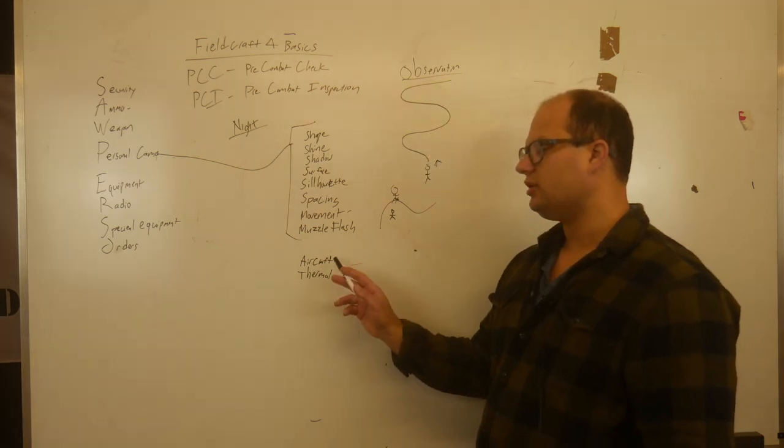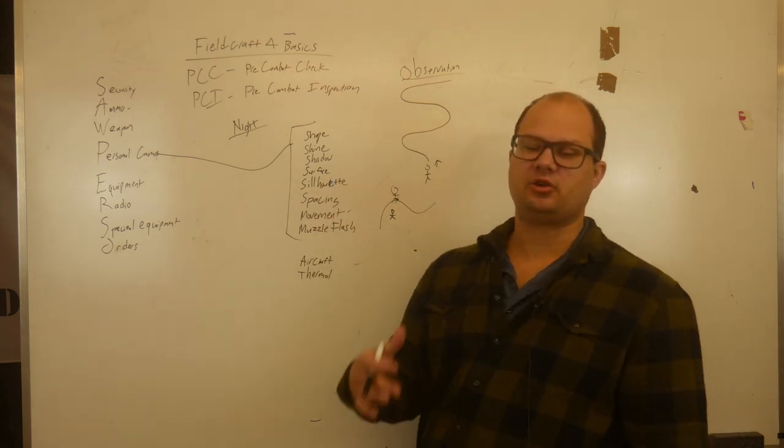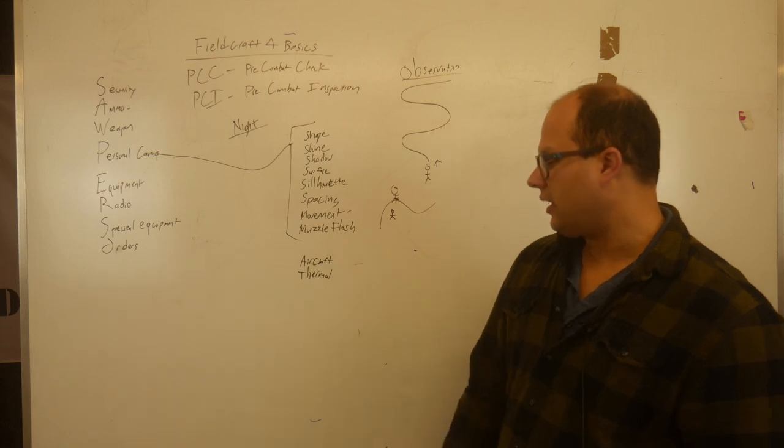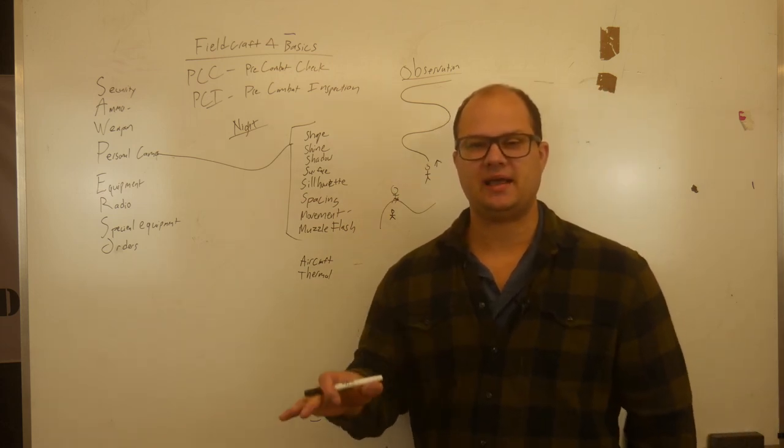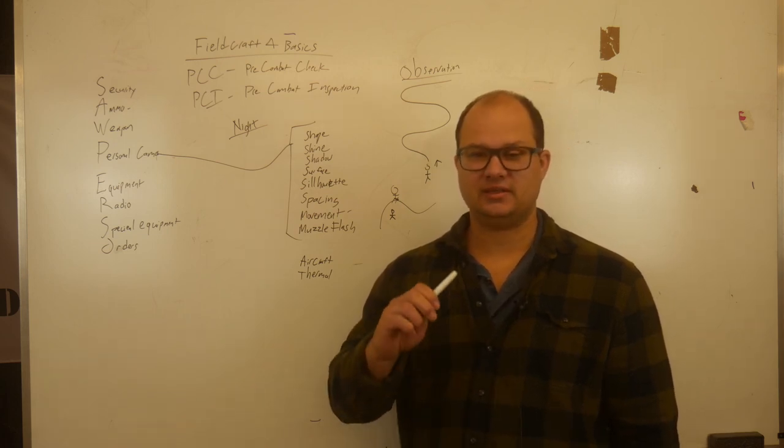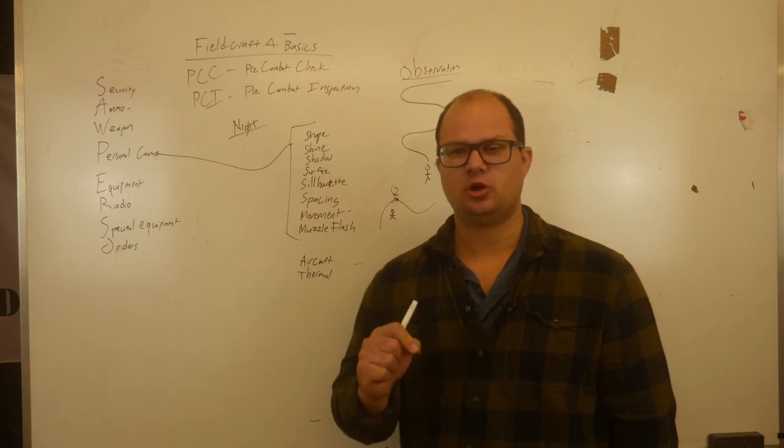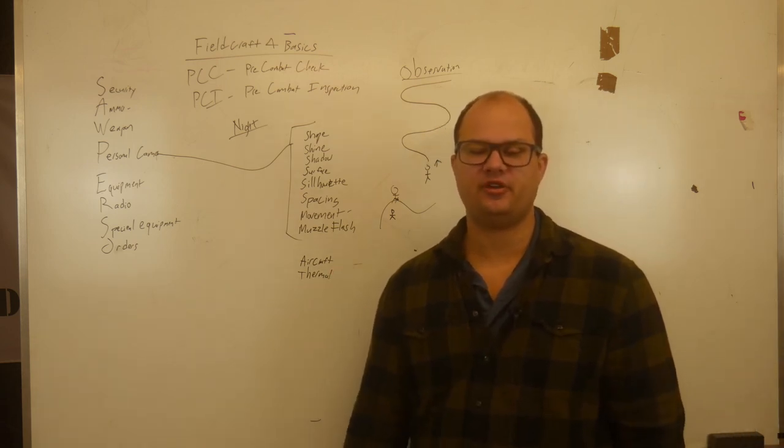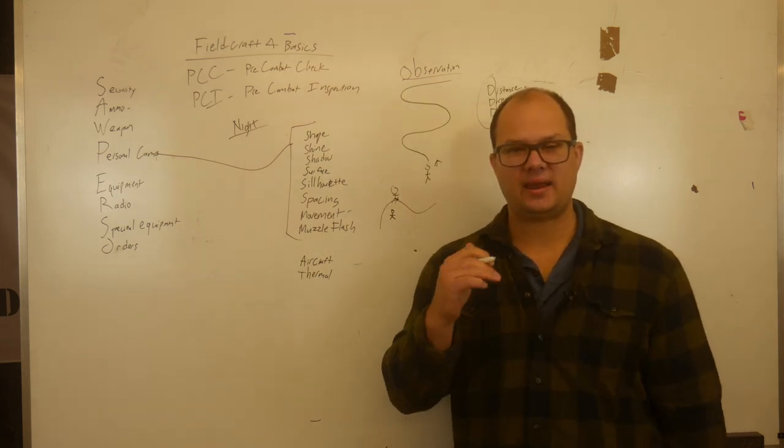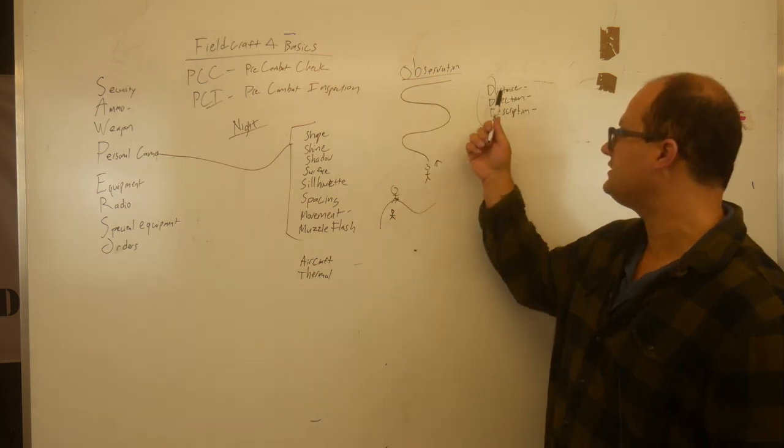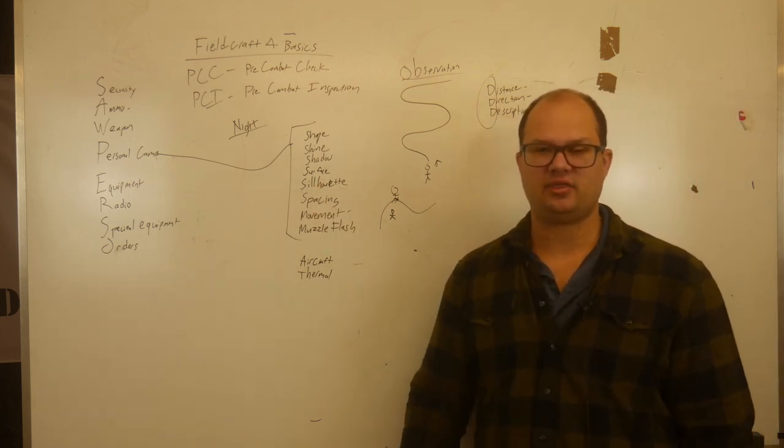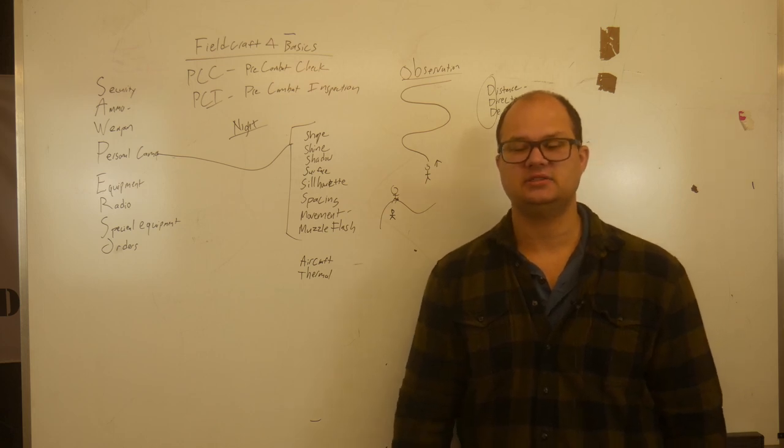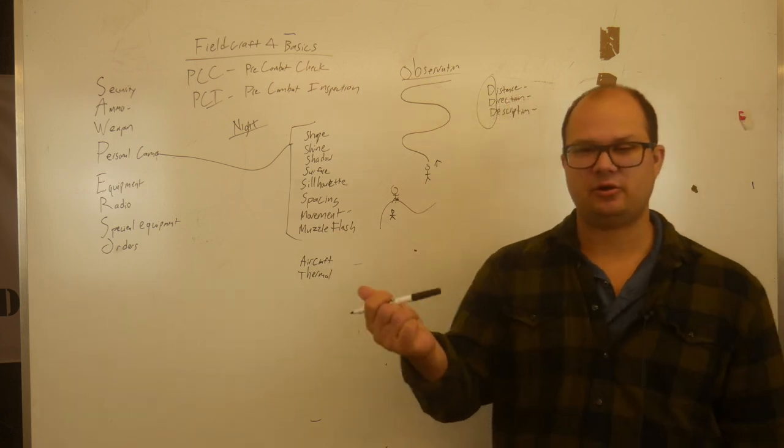When it comes to locating bad guys, it's nice to be able to use distance, direction, and description. The triple D as a quick handy thing. 300 yards to the north by the red barn. That's a good way to help people locate on what's going on and where the bad guy is when you can find that out. So that's just a helpful little acronym to keep in your pocket.